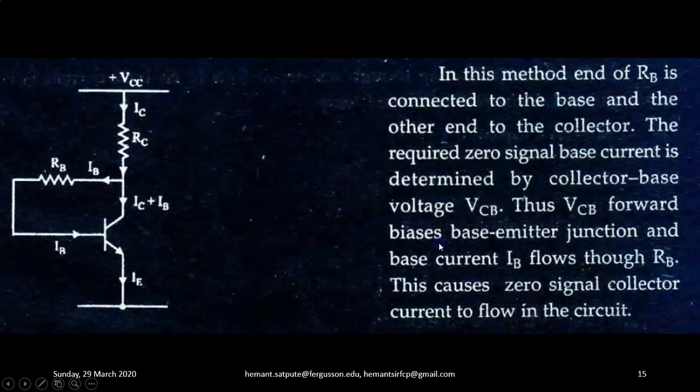Biasing with feedback resistor. Here is the circuit diagram. In this method, end of RB is connected to the collector. Previously in the previous method, the RB was connected to VCC. Now one end of the RB is connected to the collector and the other end is to the base.